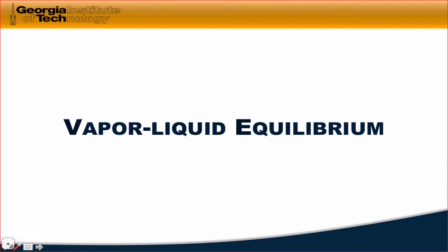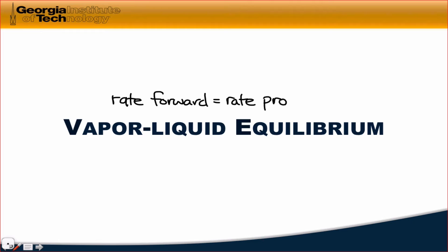Near the end of the last video we talked about physical equilibrium and the idea that for any system in equilibrium and any pair of processes forward and reverse, the important thing to keep in mind is that the rate of the forward process is equal to the rate of the reverse process at equilibrium, such that we do not notice any macroscopic change in the system even though microscopic change is still occurring. Importantly, notice that this equation only says that the two rates must be equal, not that they must be zero, and almost always the forward and reverse rates will be equal to each other but will both be non-zero.